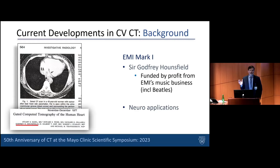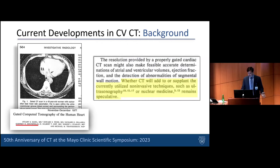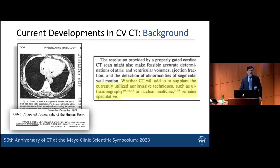But it's wrong to think the individuals who started CT work weren't thinking about the heart. This is a cutout from a 1977 paper — one of the authors, underlined in red, is Godfrey Hounsfield — on Gated Computed Tomography of the Human Heart. These guys were thinking about this way before it was feasible. The paper speculated on atrial and ventricular volumes, ejection fraction, detection of segmental wall motion abnormalities, and whether CT would supplant ultrasonography or nuclear medicine. Not speculative anymore.